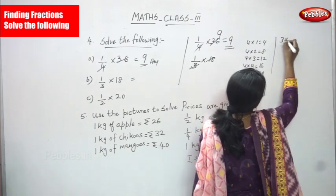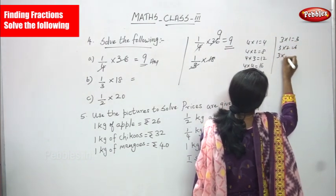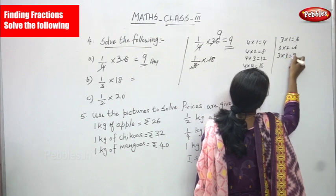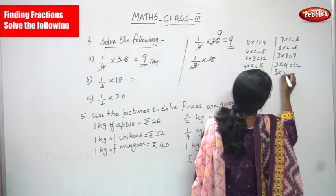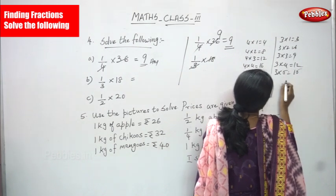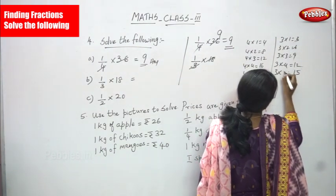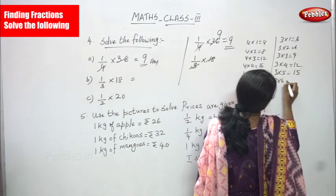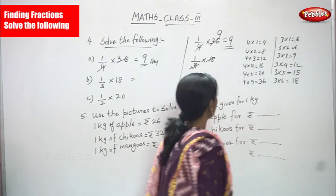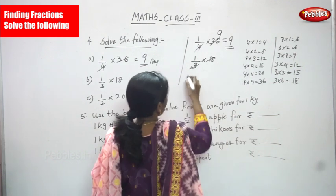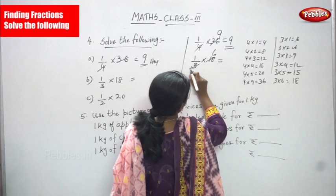Continuing the third table: 3 2's are 6, 3 3's are 9, 3 4's are 12, 3 5's are 15, and 3 6's are 18. So 18 is cancelled by 3.